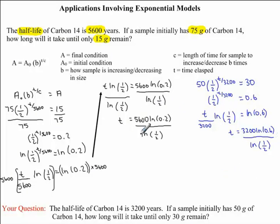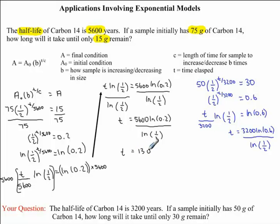Now all we have to do is put this in our calculator: 5,600 times ln of 0.2, all divided by ln of one-half. Rounding to the nearest year, T equals 13,003. Since the half-life of carbon-14 is given in years, our time is also in years.